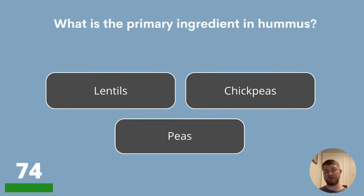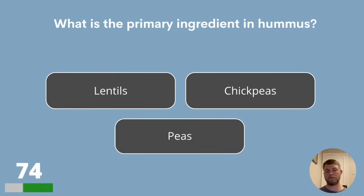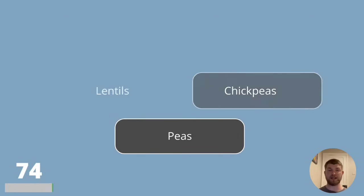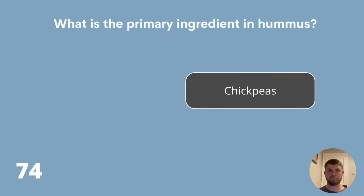Question 74. What is the primary ingredient in hummus? Lentils, chickpeas or peas? The primary ingredient in hummus is chickpeas.